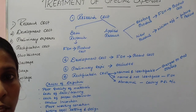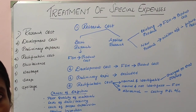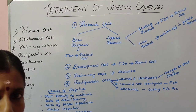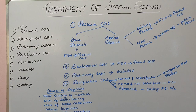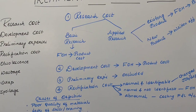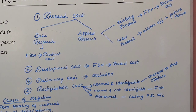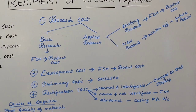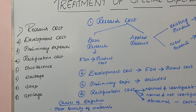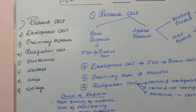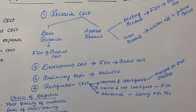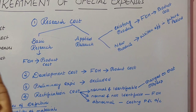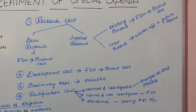Research is the art of searching for new facts or knowledge. Research cost, in terms of a company, means any expenditure incurred to produce new products, find new methods of production, find new equipment or technology, or make improvements in existing products. Simply put, research cost is any cost incurred for finding new products, improving existing products, or finding new production processes and techniques.